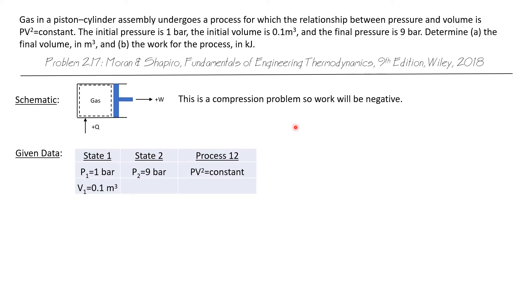The second part of the storyboard is a table that tells us everything we know about state one, everything we know about state two, and everything we know about the process from state one to state two. We know the pressure and the volume at state one, we know the pressure at state two but not the volume, and we know the process follows the relationship where PV squared is a constant, so that is a polytropic process.